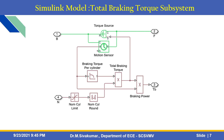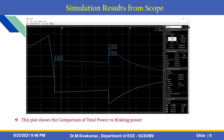By using the motion sensor, you can find out the torque. These are simulation results from the scope. Using the Simulink scope, you can analyze the power comparison between total power versus braking power. Using the interactive environment, you can find signal statistics, bi-level measurements, and peak finder measurements. This plot shows the comparison of total power versus braking power.